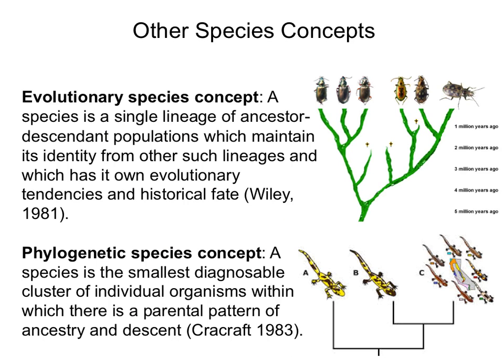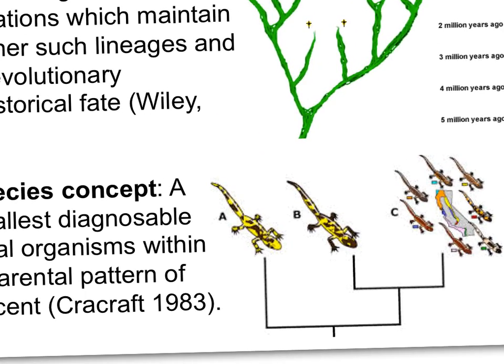The evolutionary species concept defines a species as a single lineage with ancestor and descendant populations that maintain their identity from other evolutionary lineages. The phylogenetic species concept defines a species as the smallest cluster of individuals with a clear pattern of ancestry and descent. Looking at a phylogenetic graph, organisms with their own distinct branch are a different species, while those clustered very closely together phylogenetically are considered the same species, even if they look different or inhabit different areas.